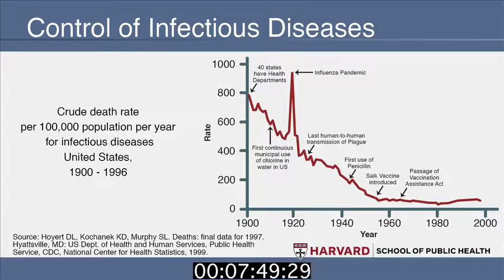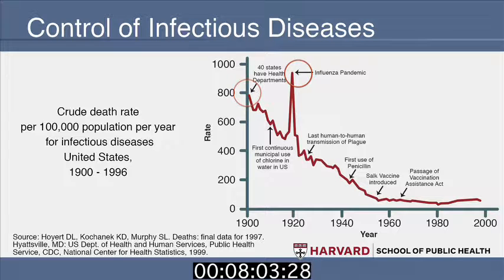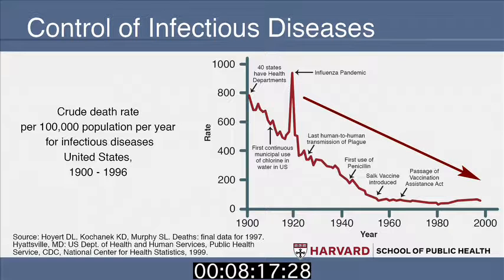Control of infectious diseases has declined dramatically over the course of the 20th century. Looking at the crude death rates from infectious diseases, back in 1900 it was very high. That spike around 1920 was the great influenza, which killed about 20 million Americans and countless millions more around the world. But the trend has been a drastic drop, because of public health interventions to make our environment safer and healthier.